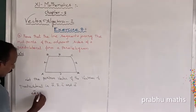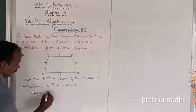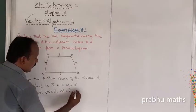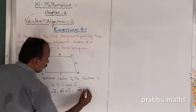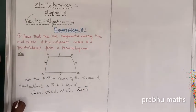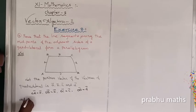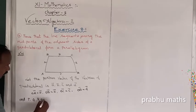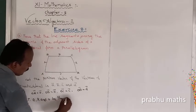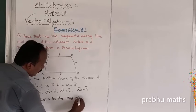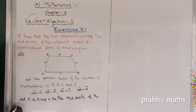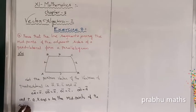OA vector is equal to A vector, OB vector is equal to B vector, OC vector is equal to C vector, OD vector is equal to D vector. Let P, Q, R, and S be the midpoints of the sides AB, BC, CD, and DA of the quadrilateral ABCD.